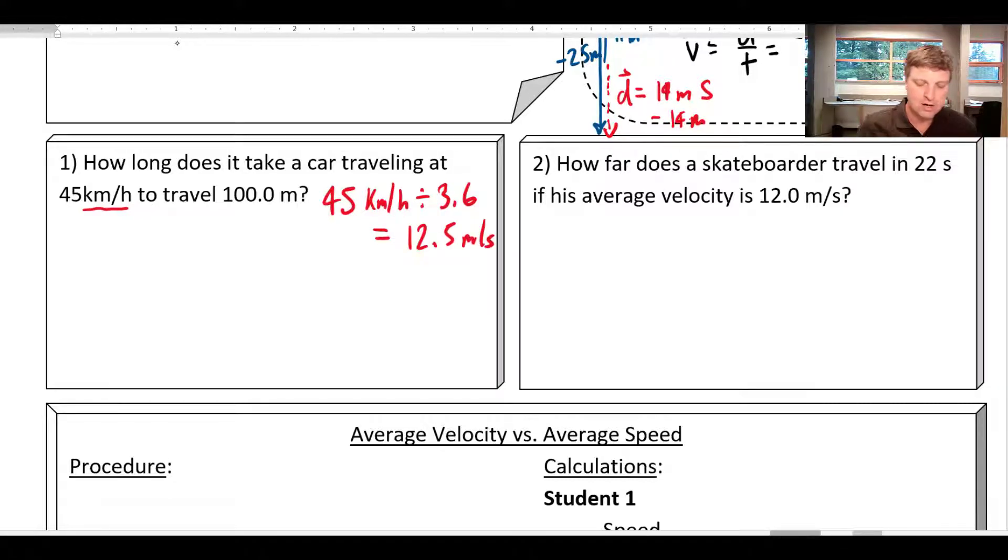Now, I want to point out here, if you can't remember whether you should multiply or divide by 3.6, just notice that an equal number in kilometers an hour versus meters per second, 12.5 meters per second is a smaller number than 45 kilometers an hour, but they're equal. So when you go from kilometers an hour to meters per second, you should end up with a smaller number as a result.